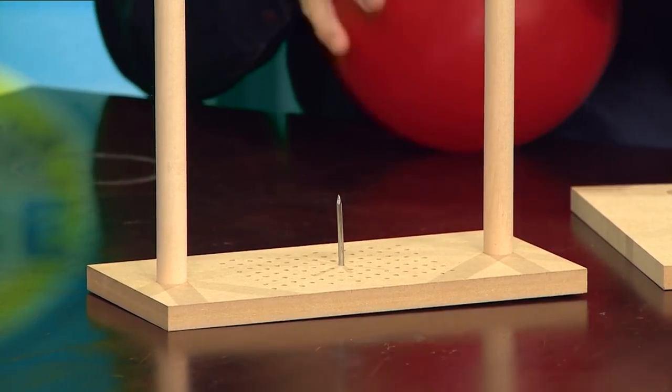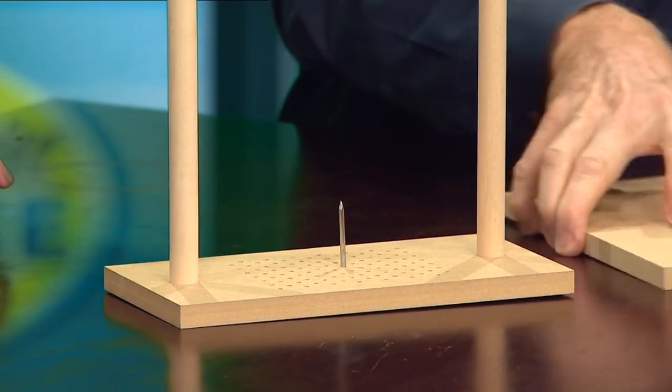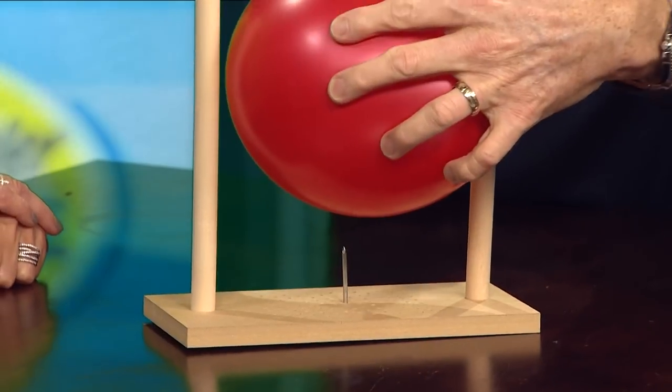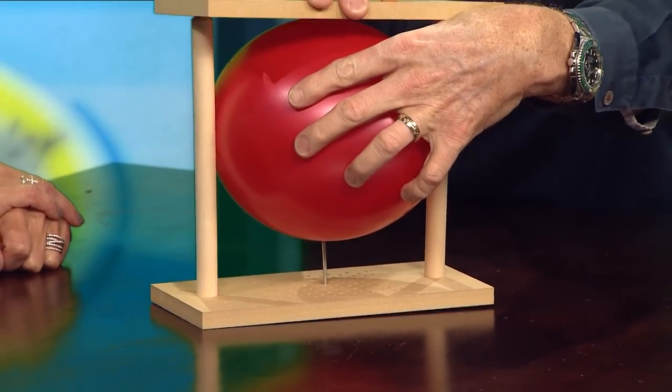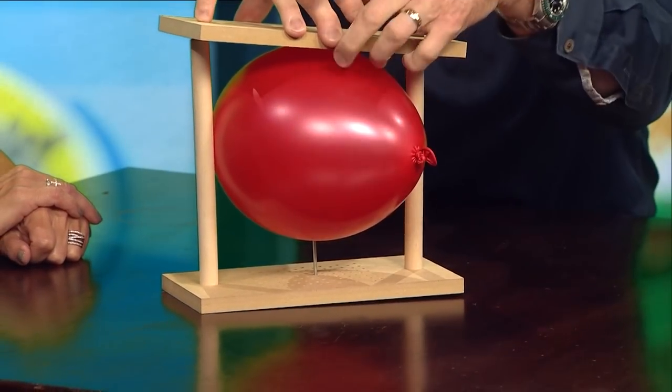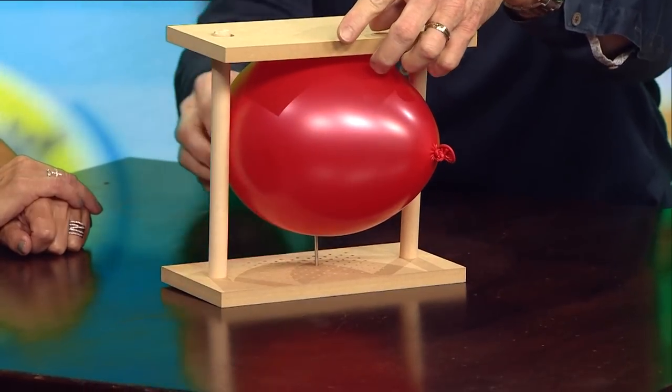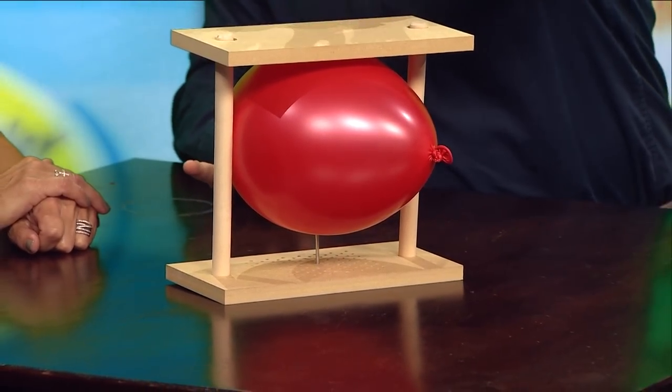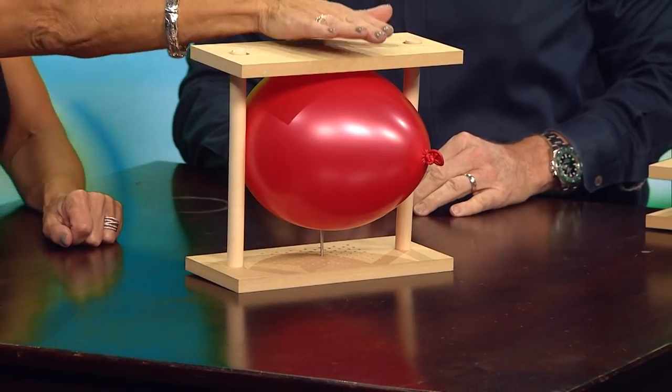So Kim, watch this. This is the bed of nail, singular. Here's what happens - we simply put this on, we rest it on the nail ever so gently, and this goes on top like this. And now, Kim, here you go. Put your hand here. You should be able to push it all the way down. It won't pop. Go for it. Ready?